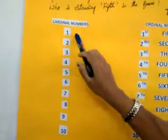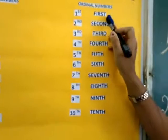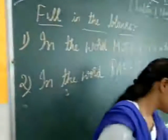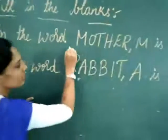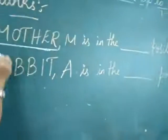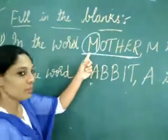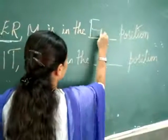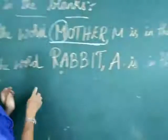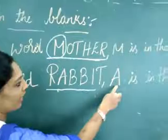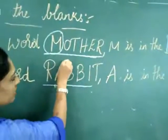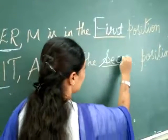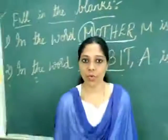Cardinal numbers are our counting numbers that we use for counting. Ordinal numbers define the position or order of something in a series, like first, second, third. Now we will see a sum on ordinal numbers — fill in the blanks. In the word MOTHER, M is in which position? It is in the first position. In the word RABBIT, A is in which position? A is in the second position: S-E-C-O-N-D. Hope you understand this session. We will meet you in the next class.